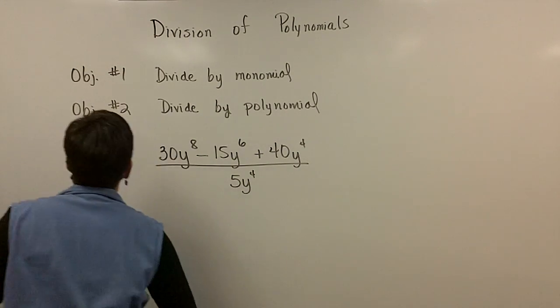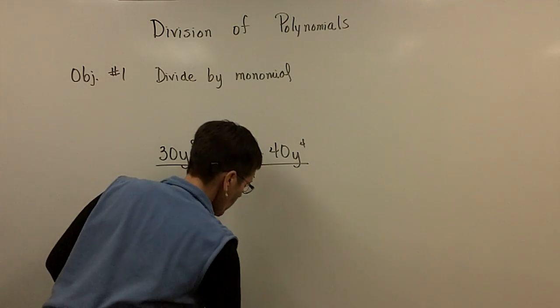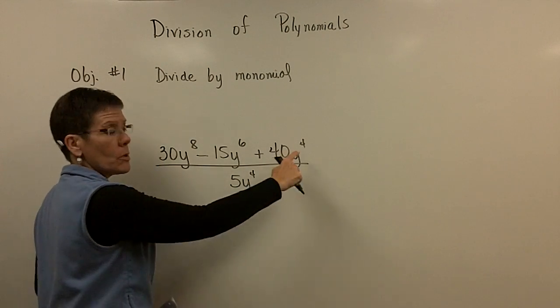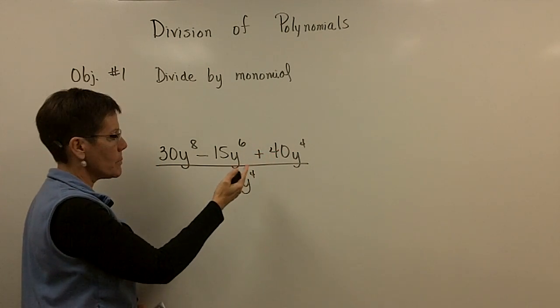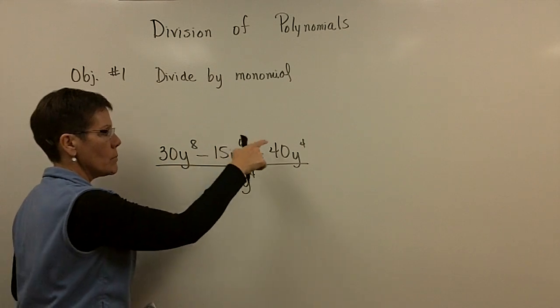So let's first focus on objective number one, dividing by a monomial. Really easy. When you have two or more terms or a polynomial up here and you want to divide by a monomial, this belongs to that term, that term, and that term.